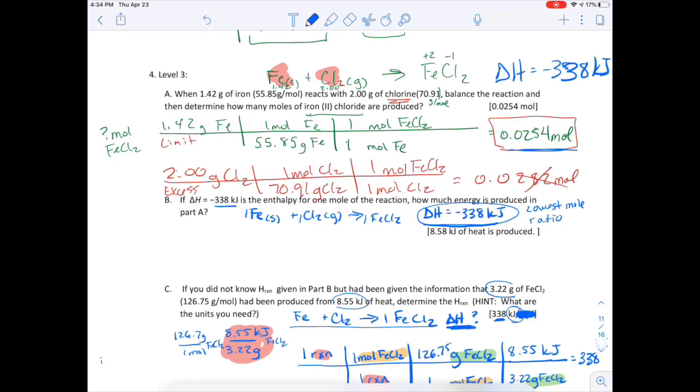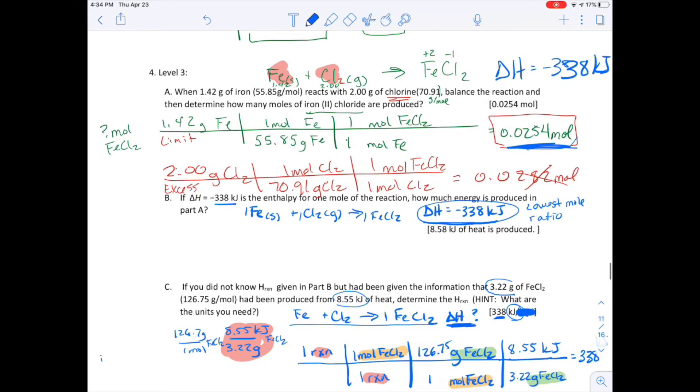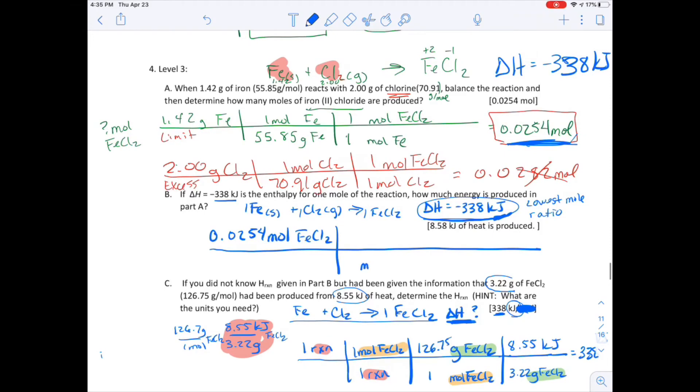So what we're saying is that this is the enthalpy. How much energy is produced in Part A? The only number that we have to go with is this number. This is the number that we figured out. So what we're going to say is that in 0.0254 moles, and who's this moles of? FeCl2. I'm going to show you the slightly longer way, and then I'm going to erase it. This helps people understand this number and why it doesn't have a per mole sign. So in that many moles of FeCl2, I have in one reaction. And then in one, that's the whole mole, lowest mole ratio reaction.